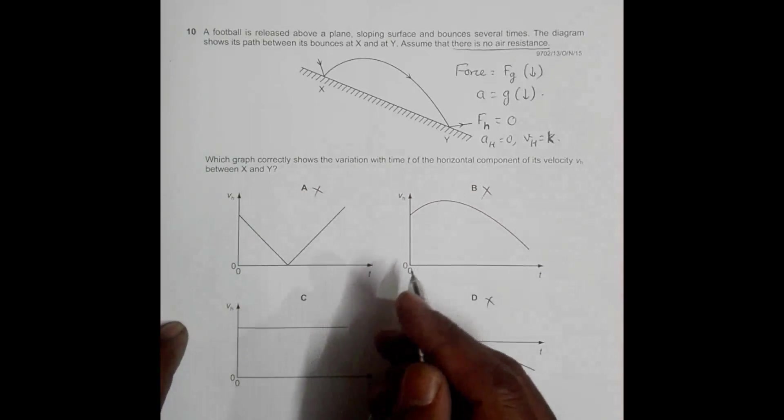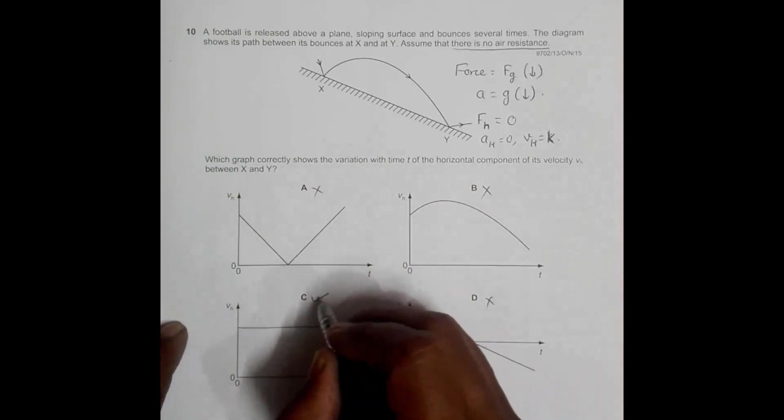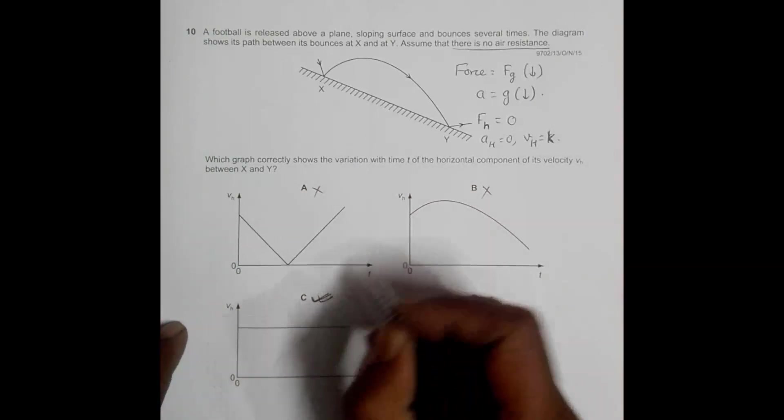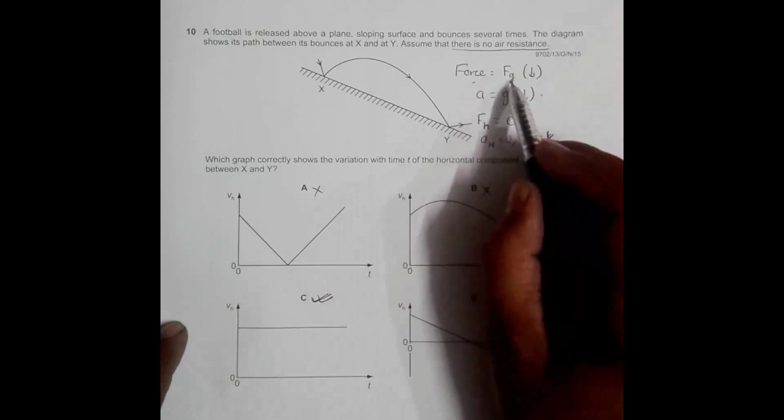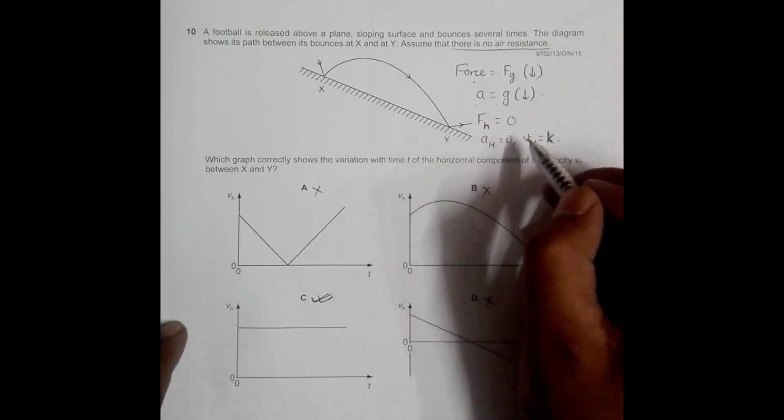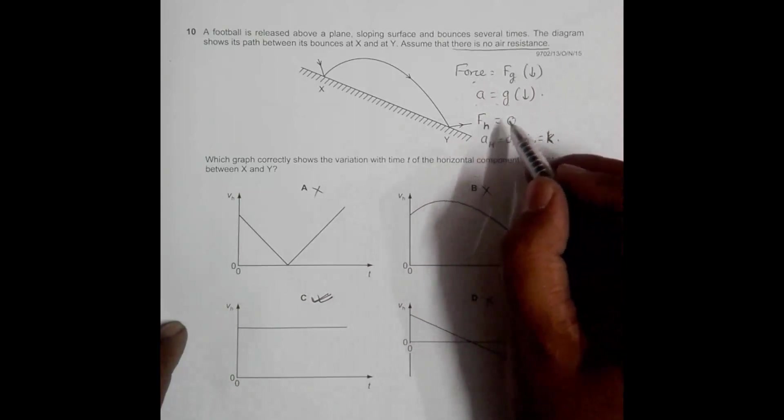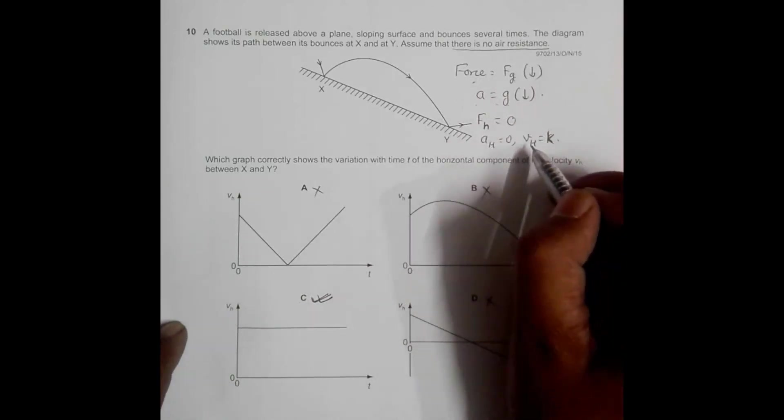So it is the vertical velocity that changes. The vertical velocity changes because there is vertical force and vertical acceleration. But the horizontal does not change because the horizontal force is zero, and the horizontal velocity does not change.